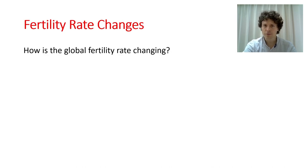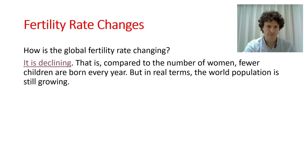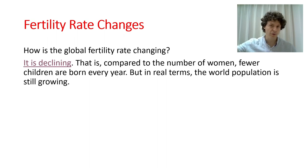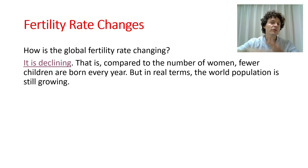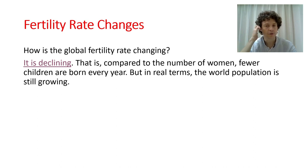How is the global fertility rate changing? It's declining. This is very interesting — we see global population growing very rapidly, but compared to the number of women, fewer children are born every year. The absolute number of women is still growing, hence world population is still growing, but the fertility rate itself is falling.